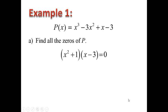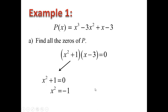We set the factors equal to 0 and solve for x. For the first binomial, x squared plus 1 equals 0. Solving for x by isolating it: x squared equals negative 1. Taking the square root on both sides, and since this is quadratic, we get positive and negative i. The square root of negative 1 is considered i, the imaginary number.